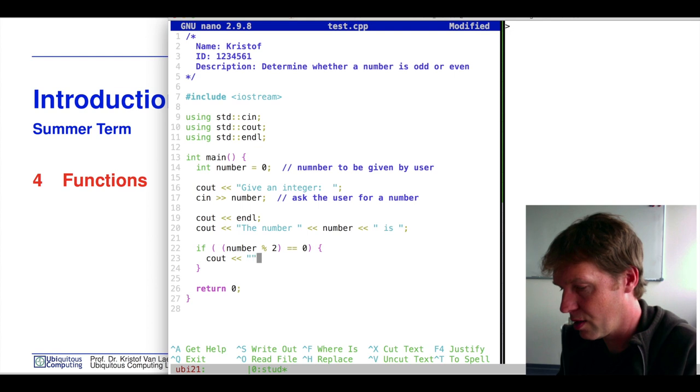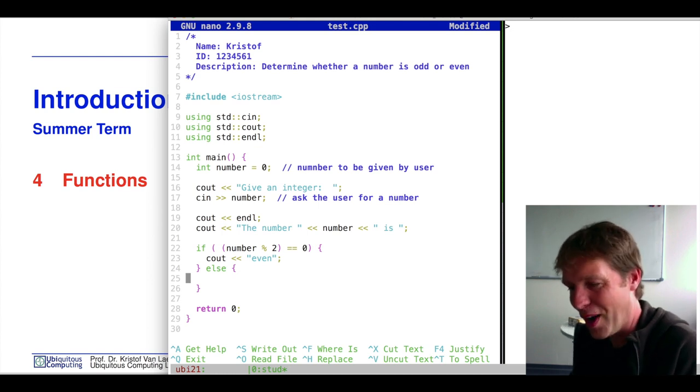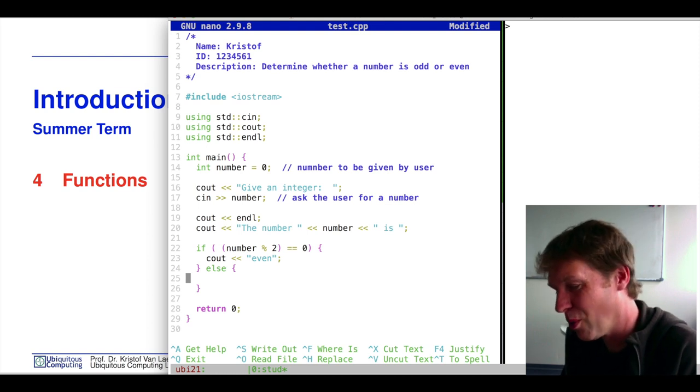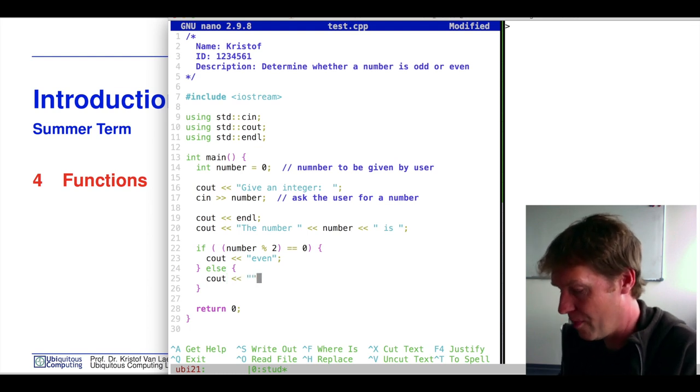If we divide the number by two and nothing remains then the number is even, so in that case we can output even. And if this is not the case, if there is a remainder when you divide number by two, then you can say the number is odd.